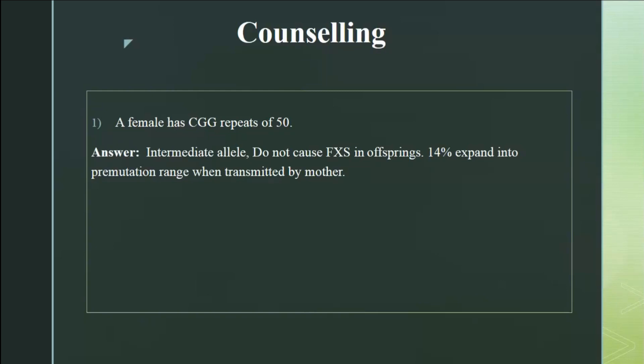The classification is: less than 45 is normal, 46 to 55 is the gray area. So for 50 repeats — an intermediate range — she may or may not have premature ovarian insufficiency problems. We can confidently say her future generation won't be affected with Fragile X syndrome and she herself won't have Fragile X. However, there is a small possibility the allele could expand into pre-mutation range in subsequent generations.